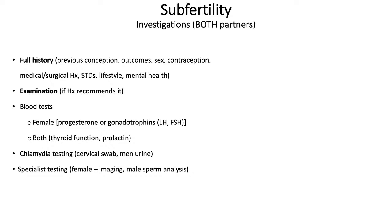With any subfertility concerns, investigations should be done for both partners and you start with a full history. That includes previous pregnancies and their outcomes, frequency of sex, duration and any difficulties, when contraception stopped, and full medical and surgical history — including STDs, especially chlamydia. Lifestyle factors impact fertility, and mental health, particularly stress, is also relevant.